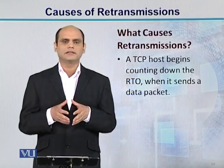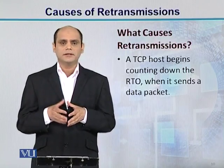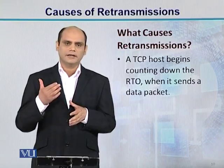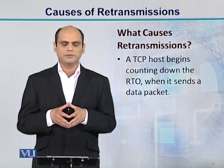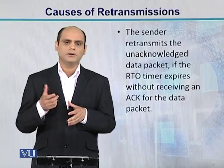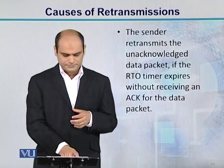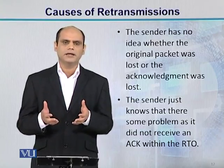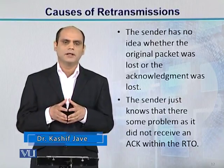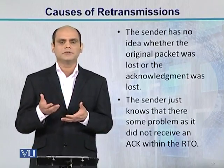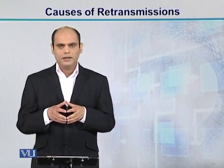Toh retransmissions ko understand karne ke baad, ab hum dekhte hain ki retransmissions ke causes kya hain. Jab ek TCP host ne packet generate karke bhej diya, toh uska jo timer hai usko on kar diya. Toh RTO jab expire hota hai, aur uski acknowledgement agar us packet ki nahi mili, toh simply us packet ko retransmit karo. Sender retransmits the unacknowledged data packet — jo packet unacknowledged hai aur uska RTO bhi expire ho gaya ho, toh simply usko retransmit kar diya jata hai. Sender ko koi idea nahi hai ki jo packet usne bheja tha, kya woh packet itself kahin lost ho gaya, drop ho gaya, ya receiver ko mil gaya aur uski acknowledgement kahin lost ho gayi. Iske baare mein sender ko koi information nahi hai. Toh sender kya karta hai: hamosha jo hi RTO ki value expire hoti hai, acknowledgement nahi mili, toh simply retransmit the packet. Is topic mein humne retransmissions ko understand kiya, aur unke causes ko understand kiya.